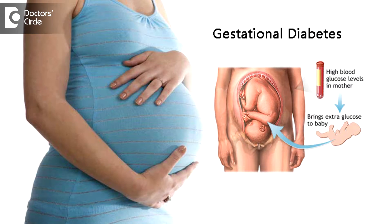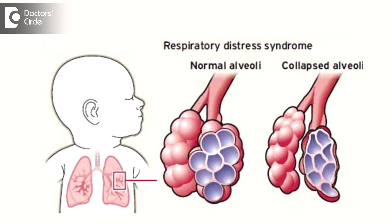If a mother is having gestational diabetes — that is diabetes of pregnancy — or she is an overt diabetic on insulin or medication, it predisposes your child to having infant respiratory distress syndrome.